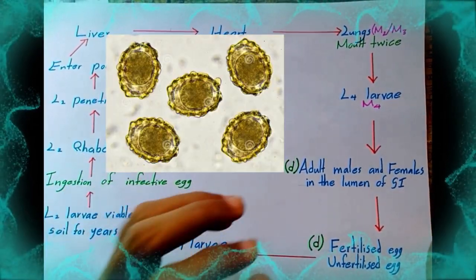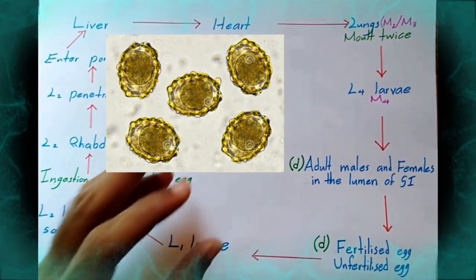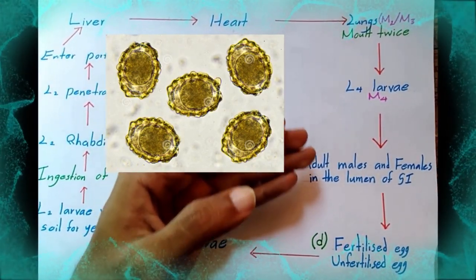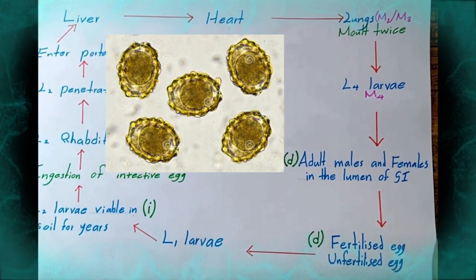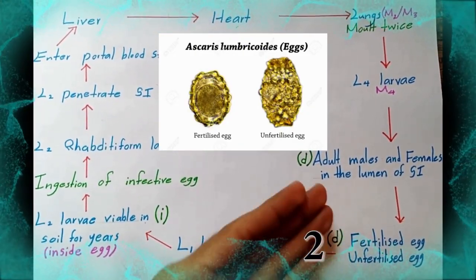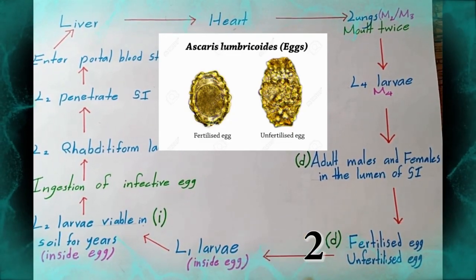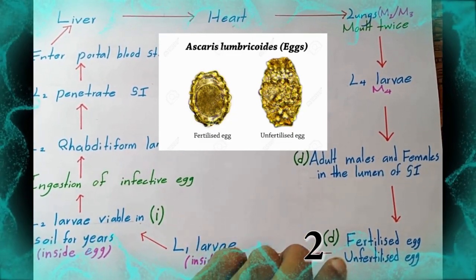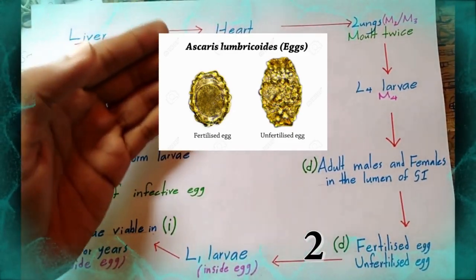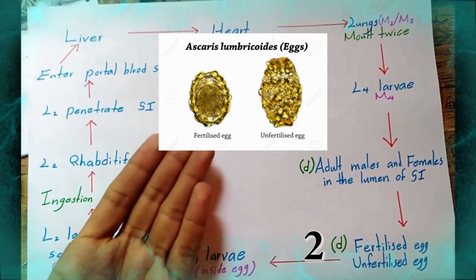A female may produce approximately 200,000 eggs per day, which are passed with the feces. Infective feces contain fertilized and unfertilized eggs. Fertilized and unfertilized eggs are the diagnostic stage of Ascaris lumbricoides. You can see these are the fertilized and unfertilized eggs.